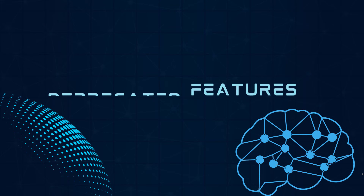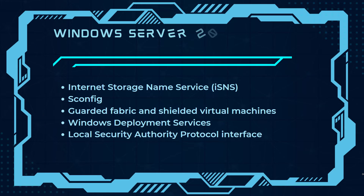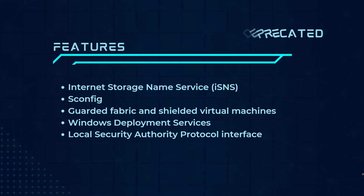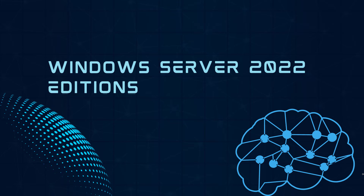Deprecated features in Windows Server 2022 include the Internet Storage Name Service (iSNS) and sConfig, which is not completely deprecated but Microsoft has stopped development on the server configuration tool and plans to remove it in the next iteration. Additionally, Guarded Fabric and Shielded Virtual Machines — which allowed VMs to run exclusively on guarded hosts — was deprecated, along with Windows Deployment Services and the Local Security Authority Protocol Interface.